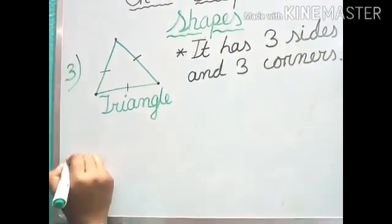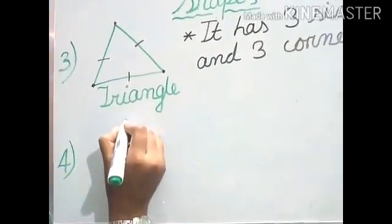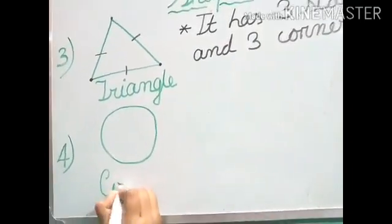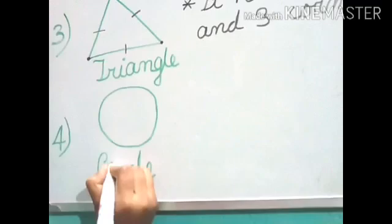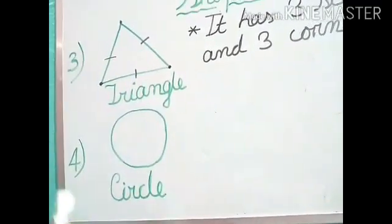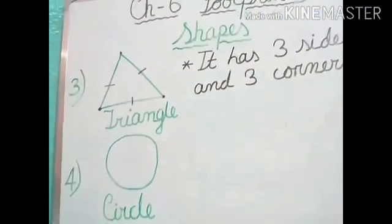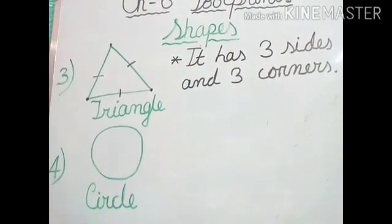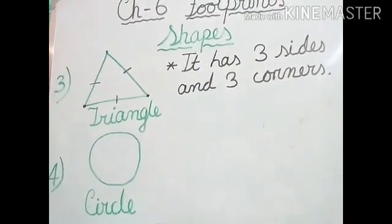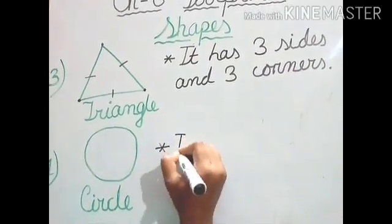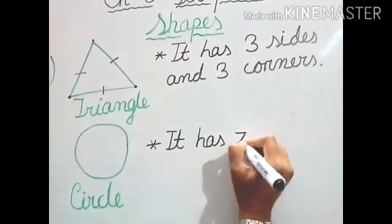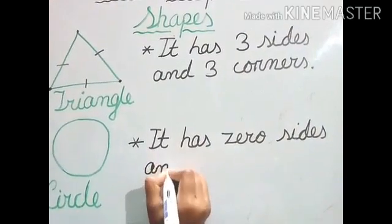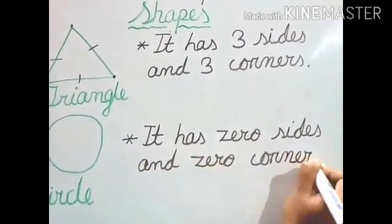Number four: the next shape we are going to draw is circle. Let us draw a circle. C-I-R-C-L-E, Circle. Now what is the property? Can you see any sides like this with the line? No. And can you see any corner? No. Because if no line is there, how will we find out the corner? So circle has zero sides and zero corners.